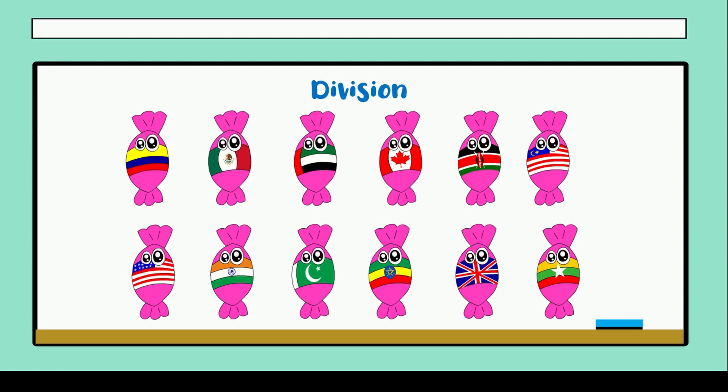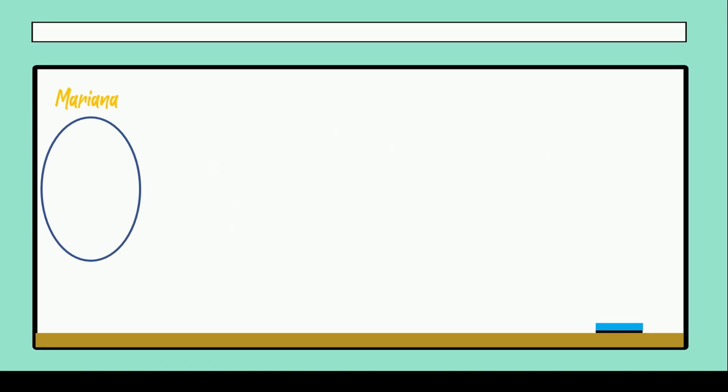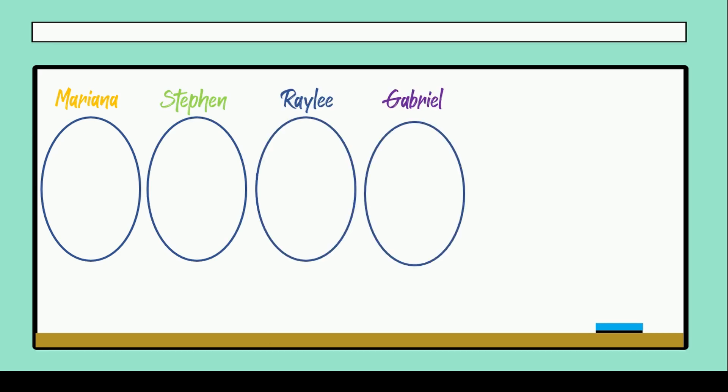So for solving this word problem, the idea is to make groups. For example: Mariana, Stephen, Riley, Gabriel, Mohammed and Andrea. So I have six students. I have to give them an amount of candies.